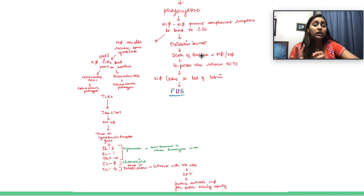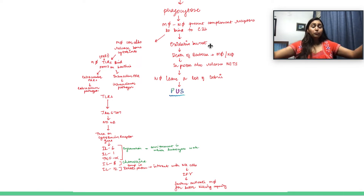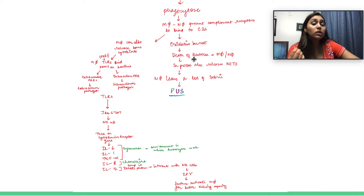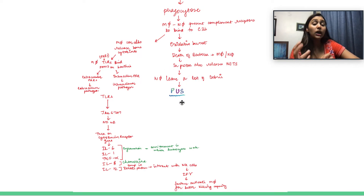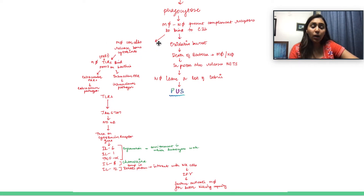Neutrophils kill by a mechanism called oxidative burst — they release their oxidative enzymes onto the bacteria, causing bacterial death, but the neutrophil also dies in the process. They can also release NETs. The debris left behind — the pus we see — is basically neutrophils that tried to get rid of bacteria. Macrophages, on the other hand, do something a little different: they can release cytokines.